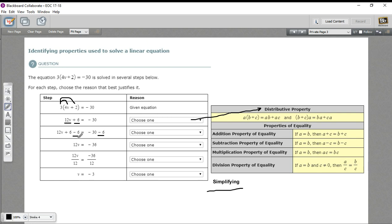If this was a negative 6, we would have added 6 to both sides, and that would be the addition property of equality. So this one is subtraction property of equality right there.